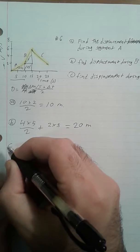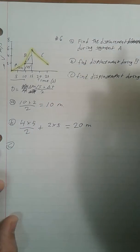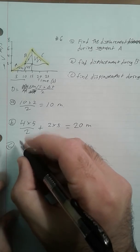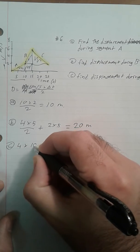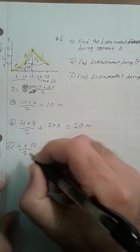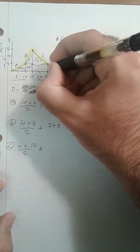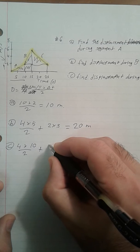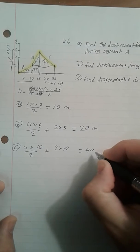And C, it's similar. First I have to get this, and that is 4 times 10 over 2. And then you add this region, which is 2 times 10. And that equals 40 meters.